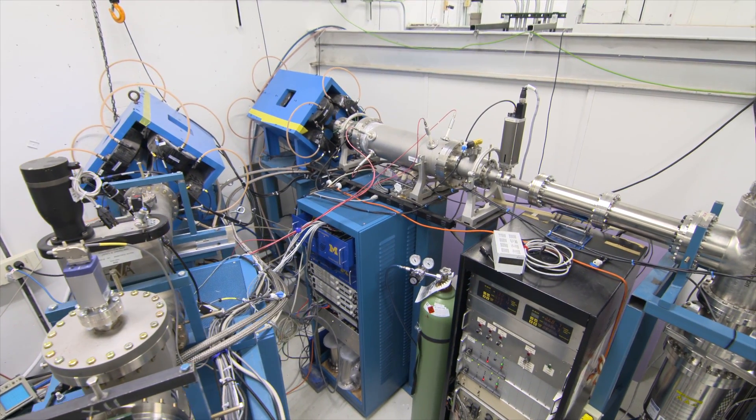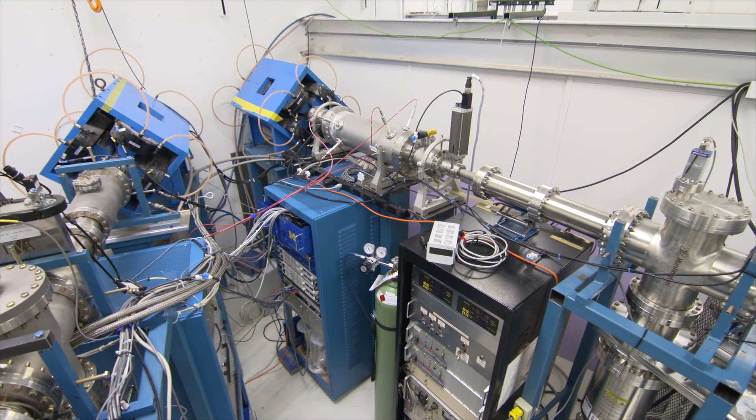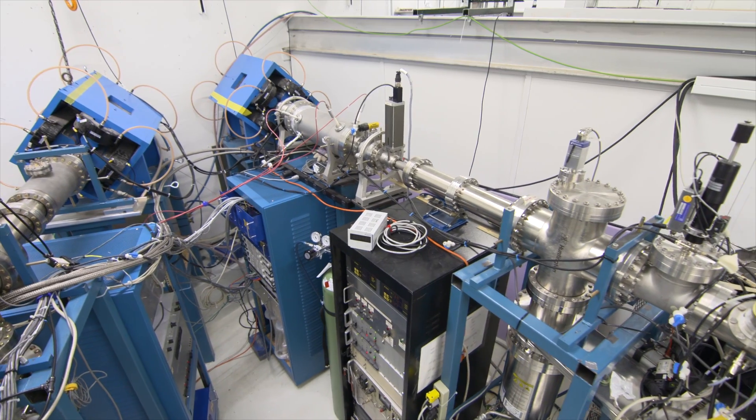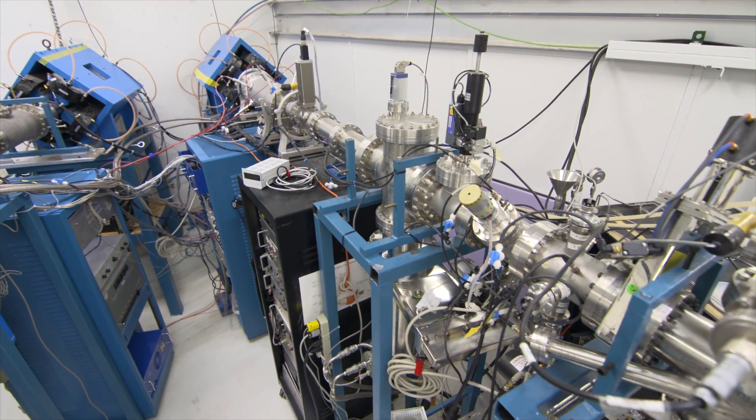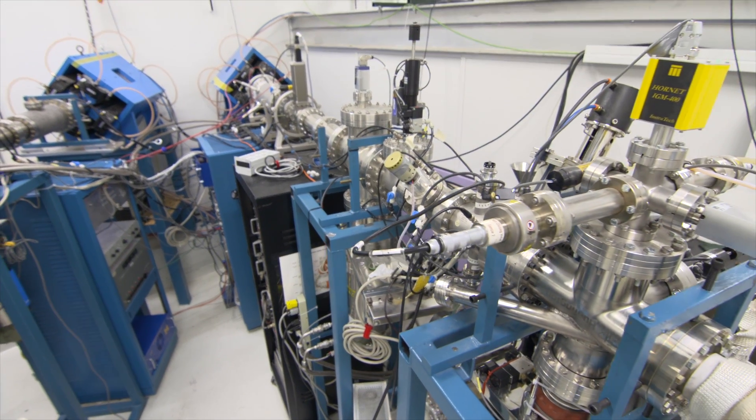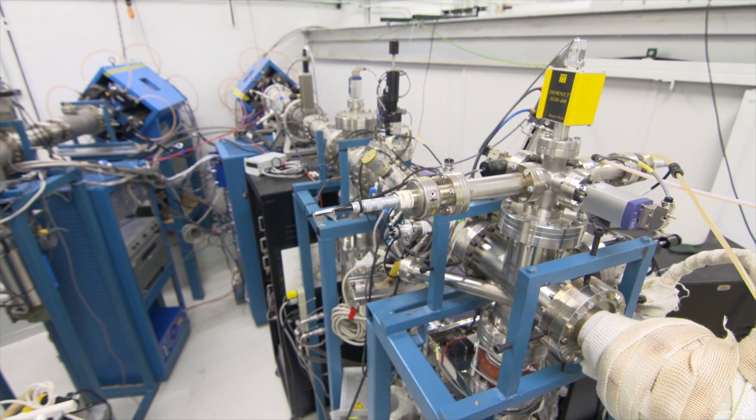The IAC chamber on beamline 3 is coupled to a high-temperature, high-pressure water loop capable of supplying flowing water at a temperature of up to 320 degrees C to a corrosion cell to conduct irradiation-accelerated corrosion experiments.